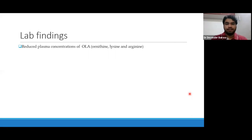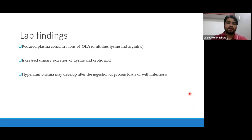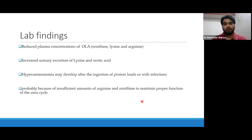Lab findings: there will be reduced plasma concentration of OLA — ornithine, lysine, and arginine. There will be increased urinary excretion of lysine and orotic acid. Orotic acid forms from ornithine by various pathways. Hyperammonemia may develop after ingestion of protein loads or with infections, probably because of insufficient amounts of arginine or ornithine to maintain proper urea cycle function.